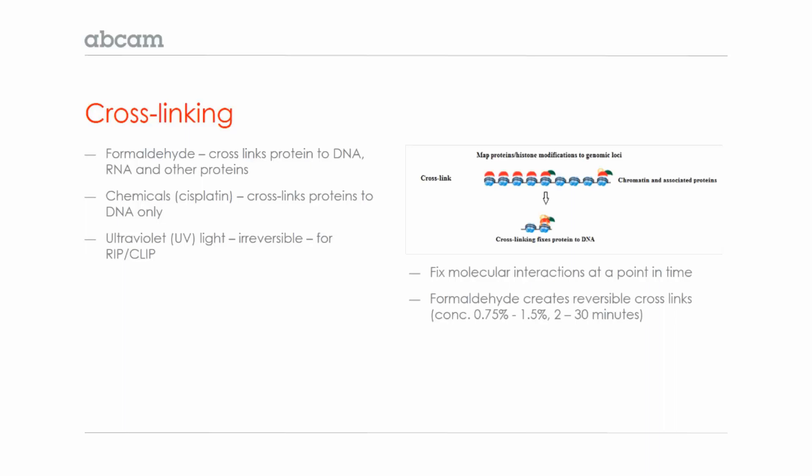Cross-linking fixes molecular interactions and freezes them at a given point in time. Importantly, formaldehyde creates reversible cross-links, and typically you'll use a concentration of 0.75 to 1.5% for 2 to 30 minutes. It's important to perform a time course to see what cross-linking time gives you the best results.